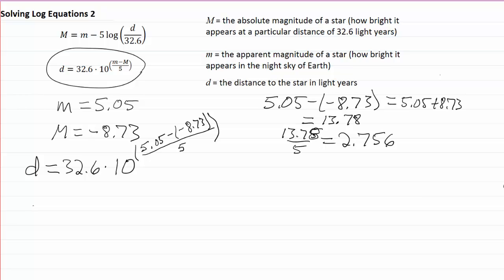My distance to the star is now going to be 32.6 times 10 to the 2.756. That exponent looks a little frightening, you've probably never seen one like that. But it's comparable to a fractional exponent and your calculator will have no trouble dealing with that. I'm going to write down the steps that you'll do on your calculator here.